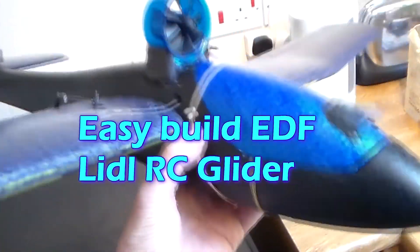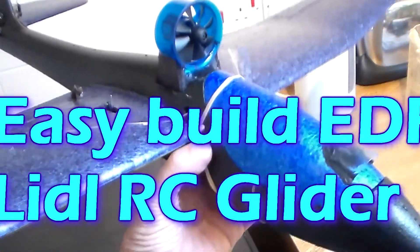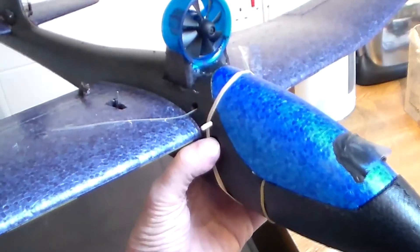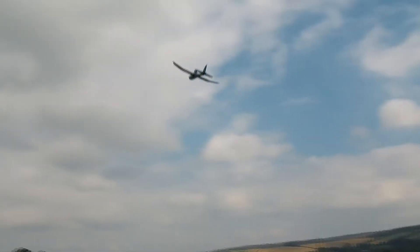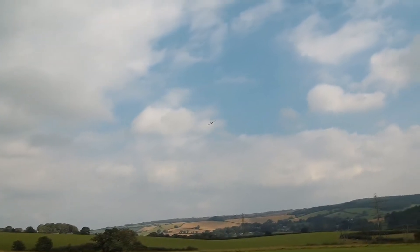Well here it is, my easy build EDF Lidl Glider. My Lidl Glider conversion number 7. My hand launched and it's flying beautifully.